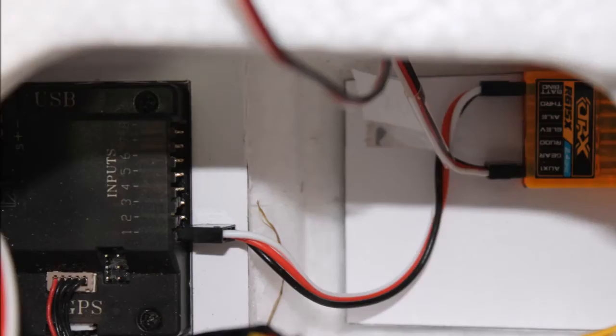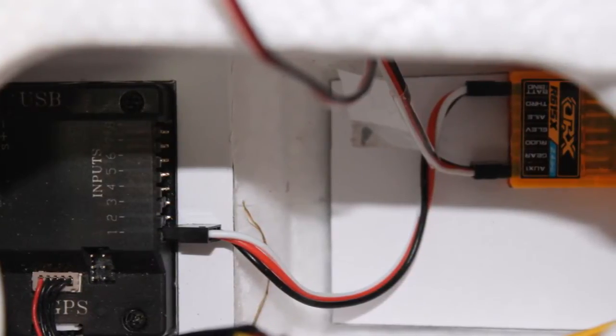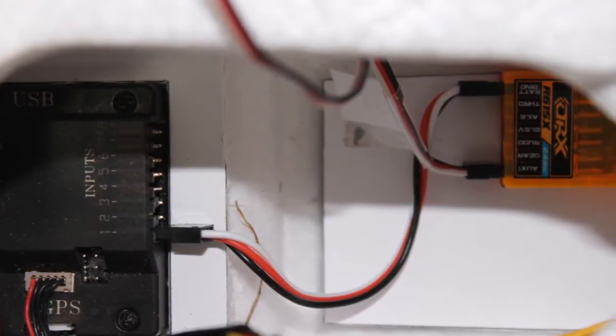The APM unit sits on the upper deck between the rudder and elevator servos. Notice it's facing backwards. With this arrangement, the 615 receiver is directly behind it in the lower deck.